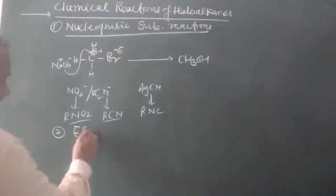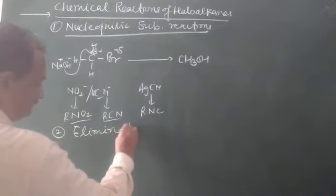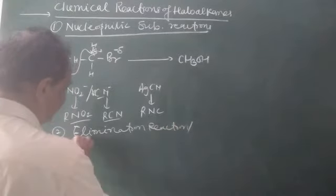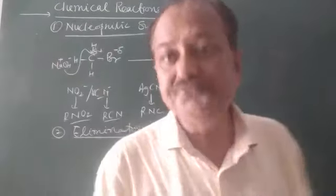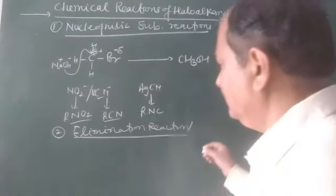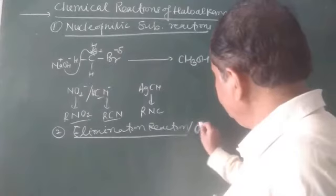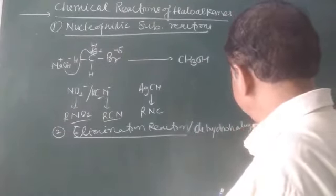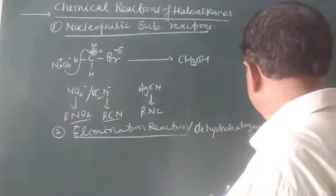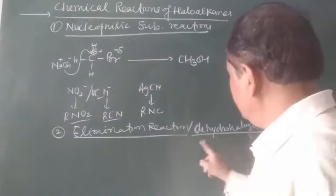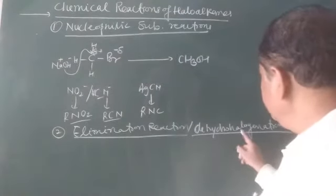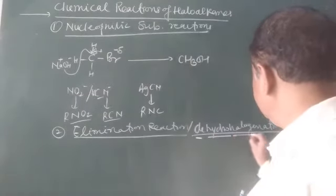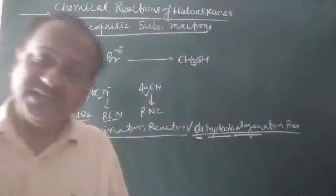The second type of reaction is the elimination reaction, also called the dehydrohalogenation reaction. Elimination means to remove some species. 'De' means no, 'hydro' means hydrogen, and 'halogenation' refers to halogen — so it is the removal of hydrogen and halogen together.